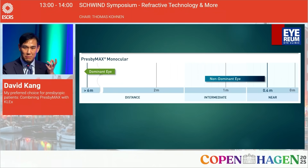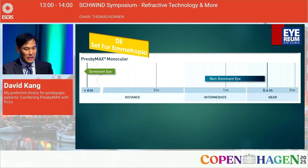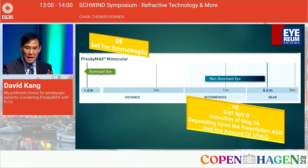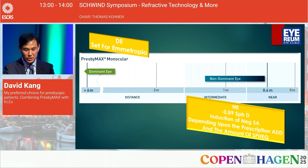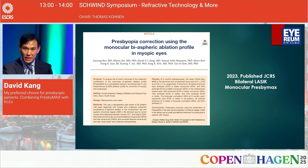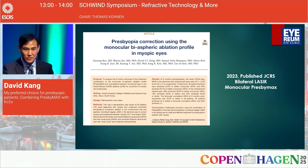Of these three, my favorite is Presbymax monocular, where we set for emmetropia in the distance eye, and for the near eye we introduce minus 0.89 diopters of sphere — which is not enough for near vision on its own. We then induce negative spherical aberration, which depends on the prescription add of the eye and the spherical equivalent of the patient, so the eye determines the outcome. We published this in the Journal of Cataract and Refractive Surgery in early 2023 using bilateral LASIK.